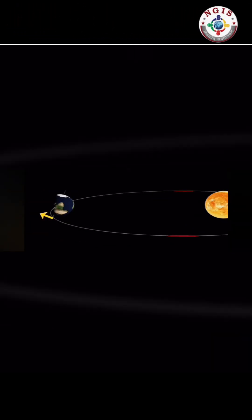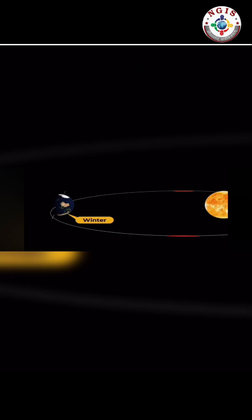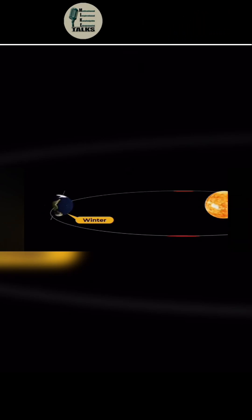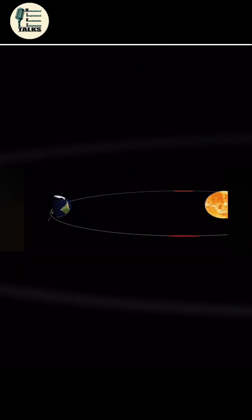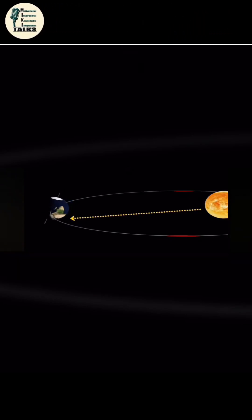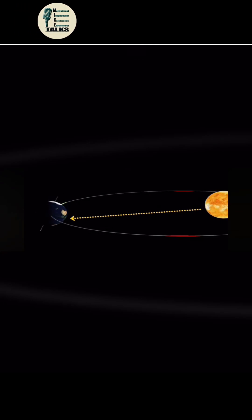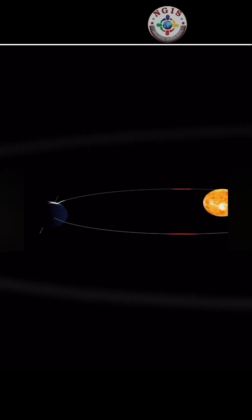Winter Solstice: When the northern pole is tilted far away from the Sun, it's winter in the northern hemisphere.